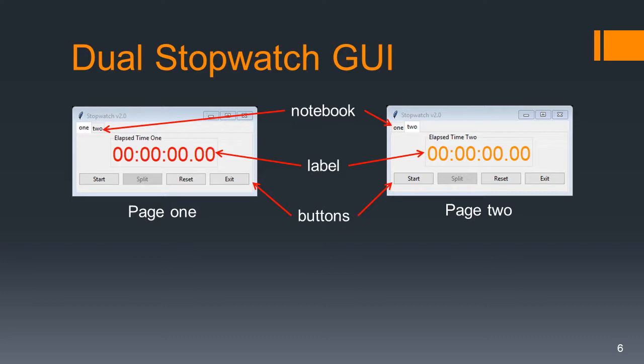Here is what our GUI is going to look like. We have our tabbed notebook — it looks like a normal frame except for the little tabs at the top. Whenever one is active, you can see it's highlighted. We have page one and page two. With the stopwatch stopped, the label on page one reads 'elapsed time one' and it's red. On page two, it's labeled 'elapsed time two' and it's orange. The buttons are as before.